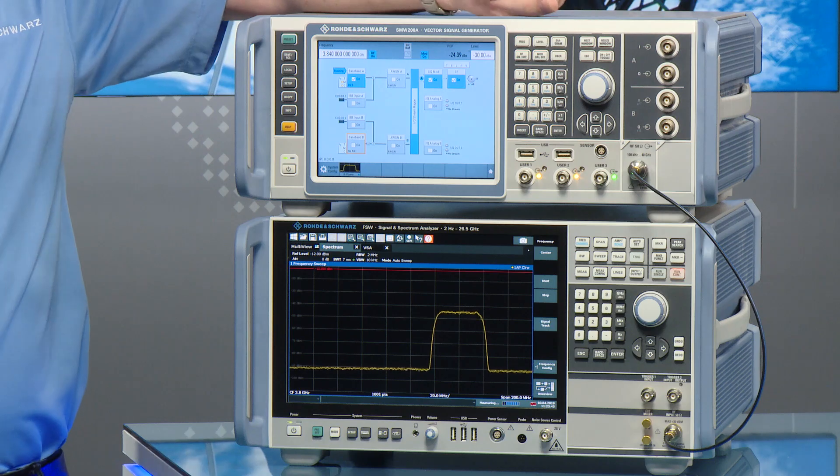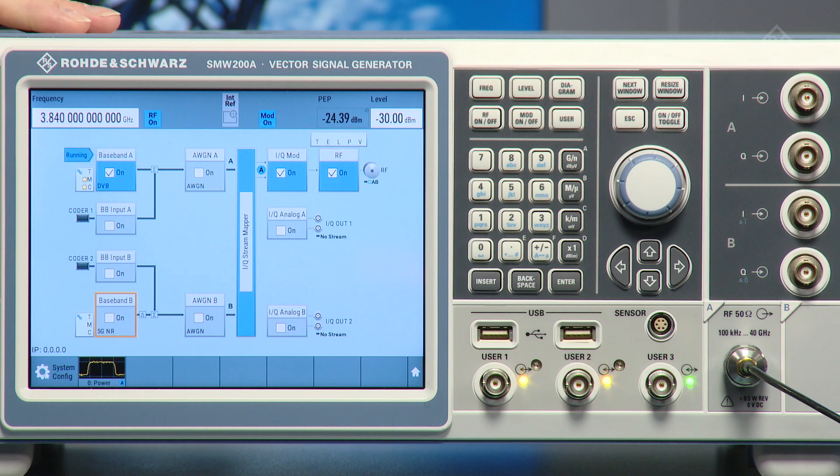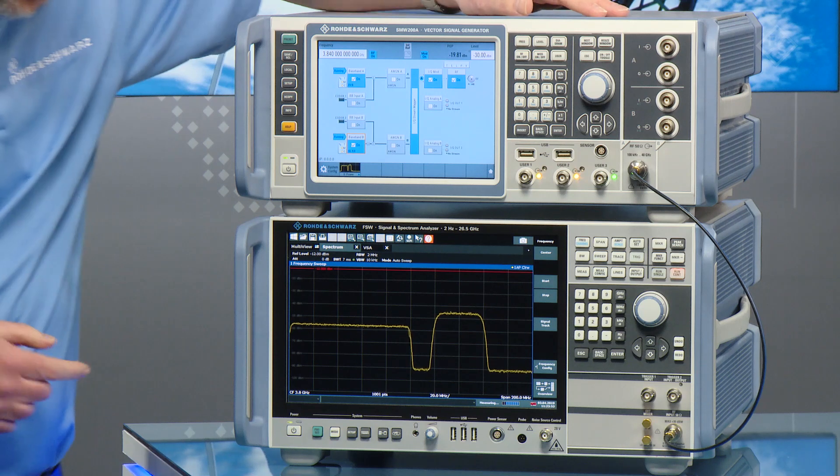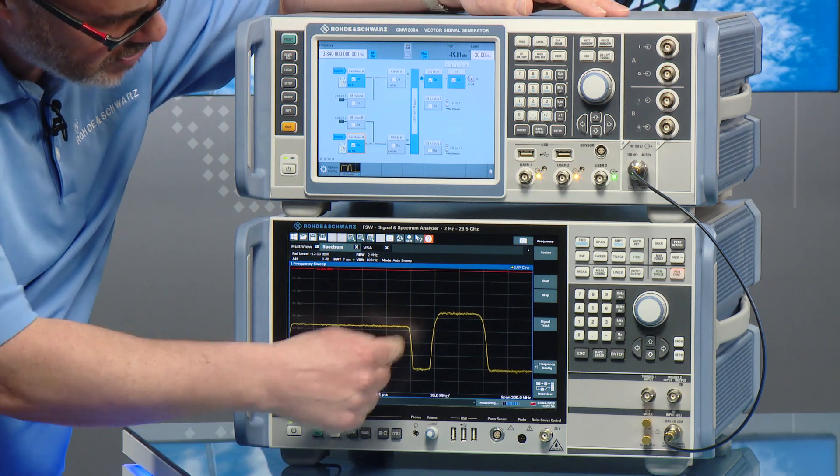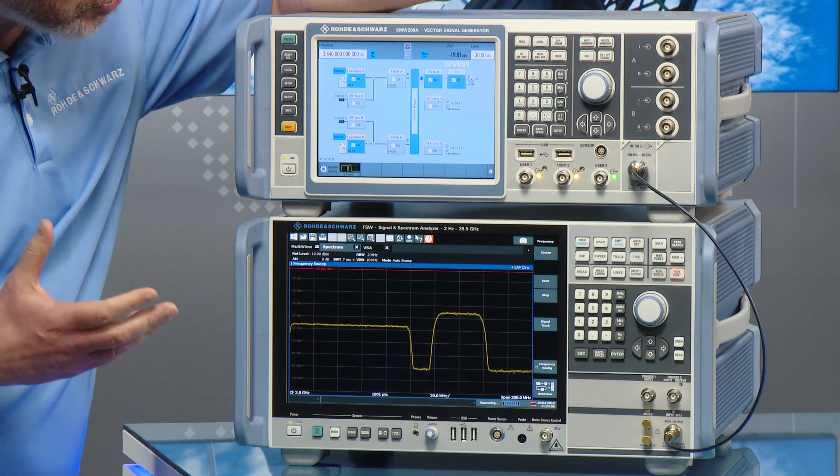But now we want to add the interference signal. So back on the vector signal generator, I just go to baseband B and I've got 5G NR. I just switch it on and on the spectrum analyzer below, you see this 100 MHz wide signal. So we've now got our two signals.